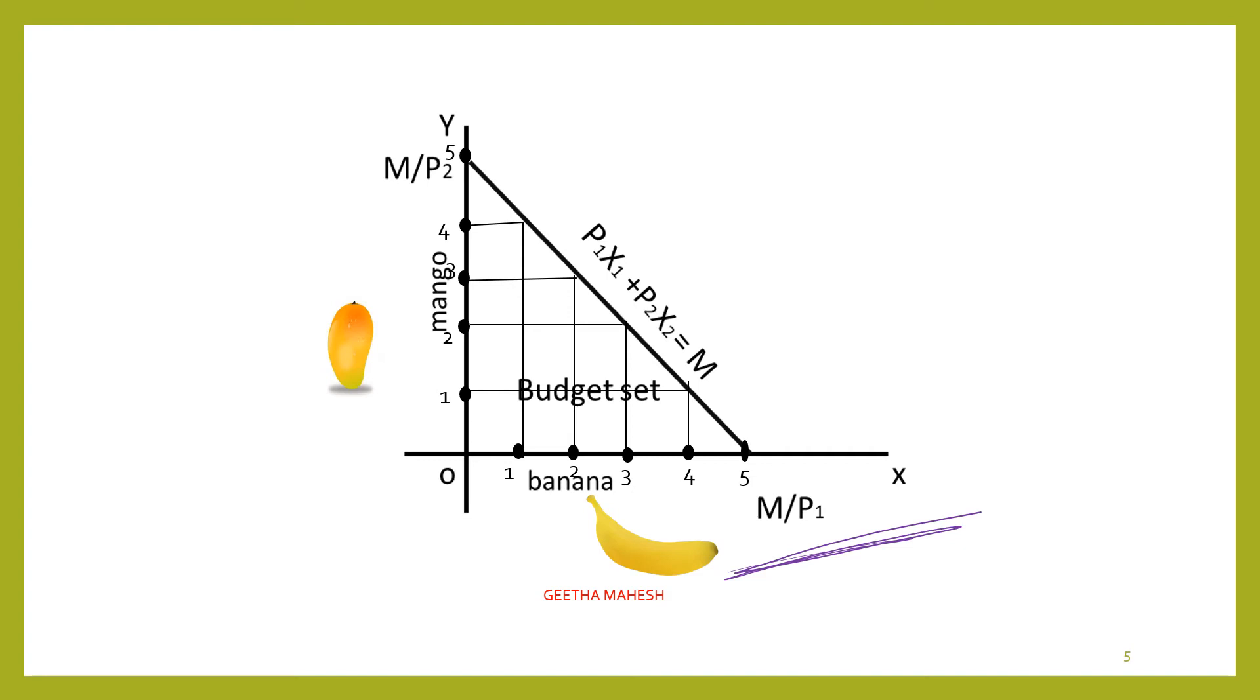Looking at the diagram, x-axis measures banana and y-axis measures mangoes. All combinations which lie on the budget line are included in the budget line. But the budget set includes not only the budget line combinations, but also all other combinations below the line. Therefore, the budget line is a part of the budget set.